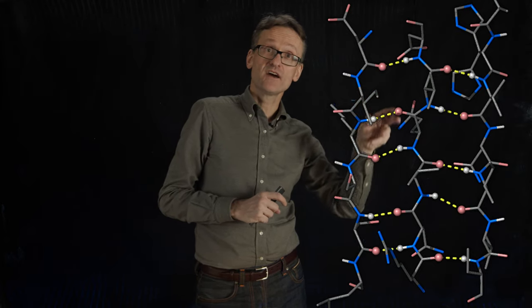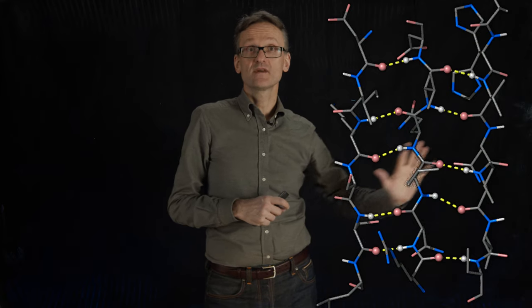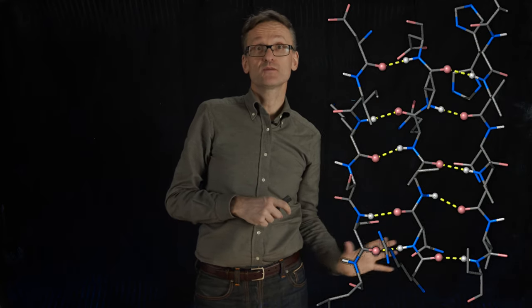Slightly more complicated than the alpha helix, but here too you have lots of hydrogen bonds between these so-called strands, and together these form an extended two-dimensional structure called the beta sheet.